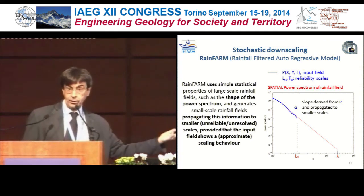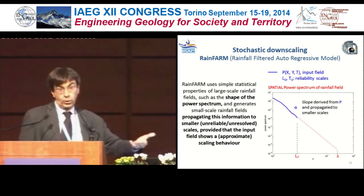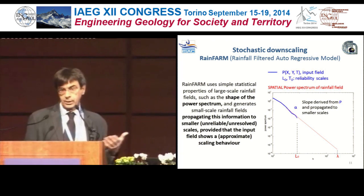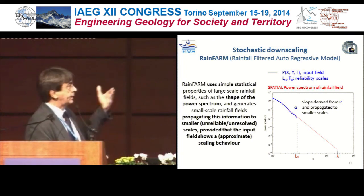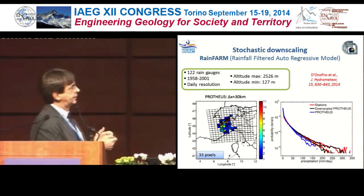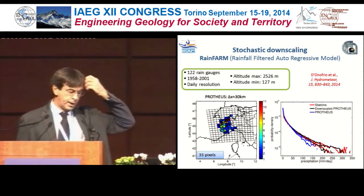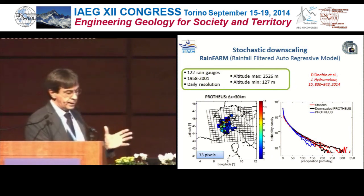You generate a stochastic field which is Gaussian because it has random Fourier phases. Since precipitation is non-Gaussian, you apply a nonlinear transformation — the simplest is the exponential, which gives a log-normal distribution, or other transformations if you want to be more sophisticated. So you get an image of the field at very small scales. As an example for this area, Piedmont has more than 100 rain gauges managed by ARPA Piedmont over the last 50 years, and they have built a 10-kilometre grid with rainfall.